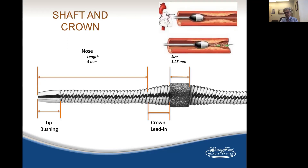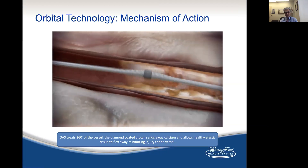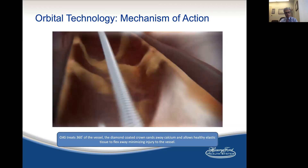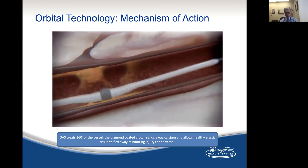This is the crown — the classical crown for coronary orbital atherectomy, size 1.25. The FDA approved the larger size, but this is what's available in the market. If you notice, it has an off-center of gravity. When it rotates at 80,000 or 120,000 RPMs, it will orbit around the vessel. This is different than the front cutting with rotational atherectomy. The orbit will go around the vessel and ablate the calcified plaque, and not damage the non-calcified tissues.